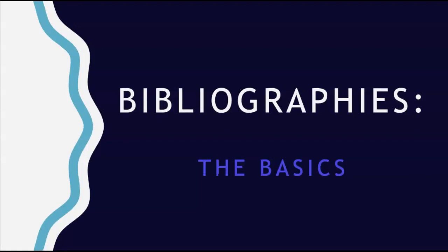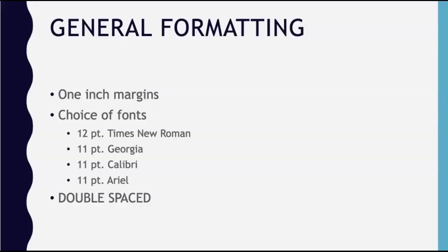A bibliography is a list of sources referred to within a work. In APA style, the bibliography is called a references page. On this page, you will list all of the sources you used to write your own paper. Before we get into the details of citing sources, first review these guidelines on page formatting. These formatting rules apply not only to your references page, but to your whole paper.